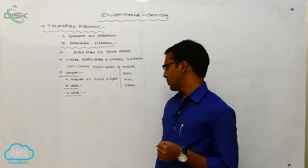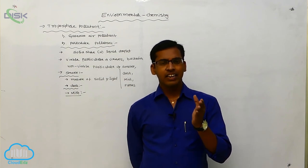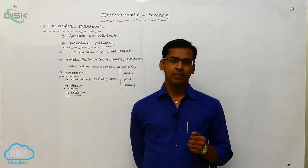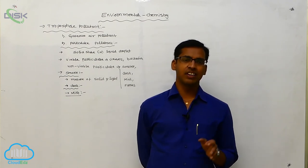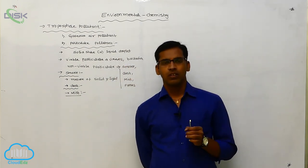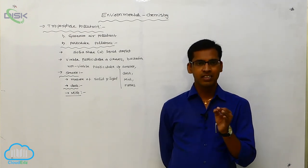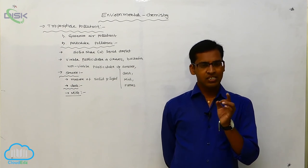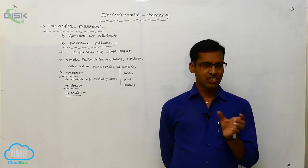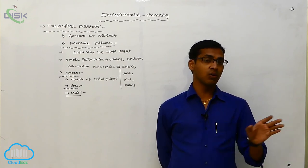Next is fumes. Fumes means the solid state particle is directly converted to a gaseous state — there is no liquid state involved. The main difference between mist and fume: in mist, solid is converted to vapor through a liquid state via condensation; in fumes, solid is converted directly to gaseous state without a liquid state.